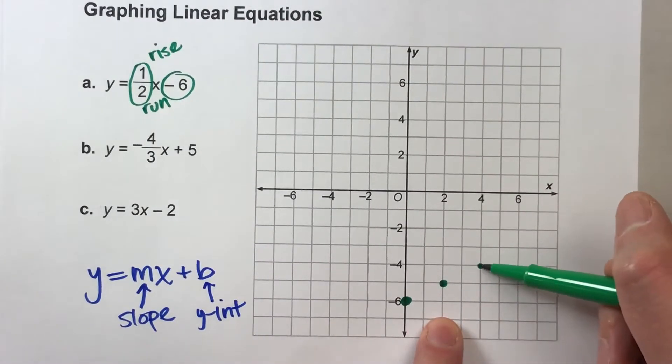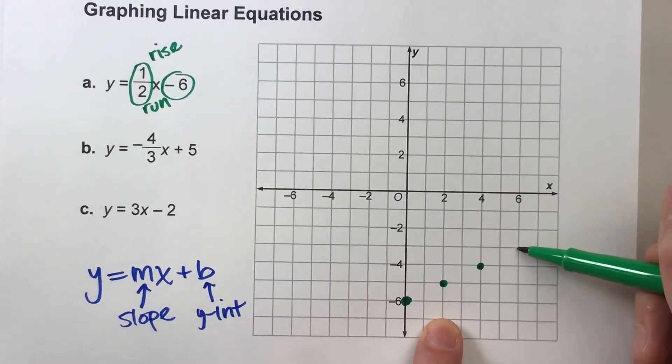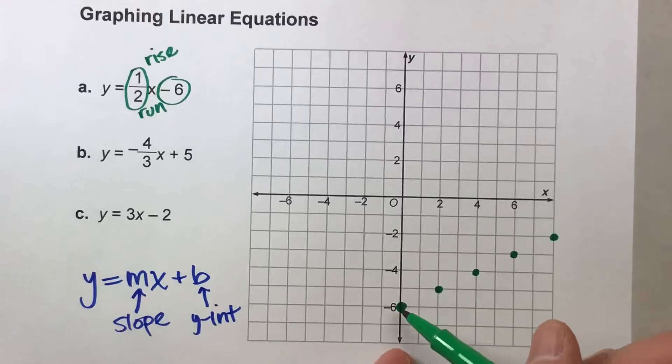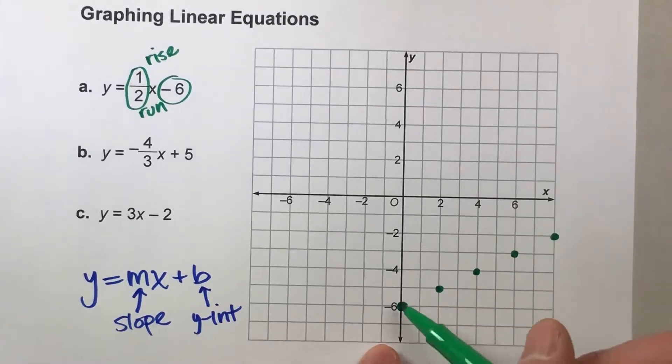Up 1, right 2, plot a point. Up 1, right 2, plot a point. Up 1, right 2, plot a point. Up 1, right 2, plot a point. And now you can kind of see what the pattern of the points is going to be.